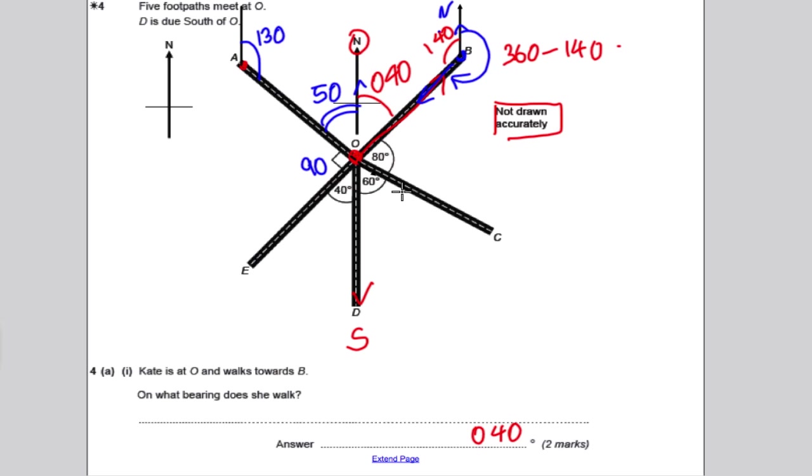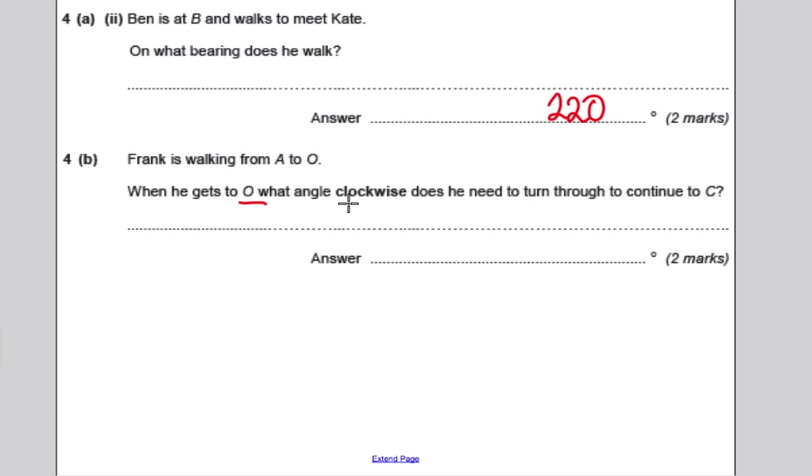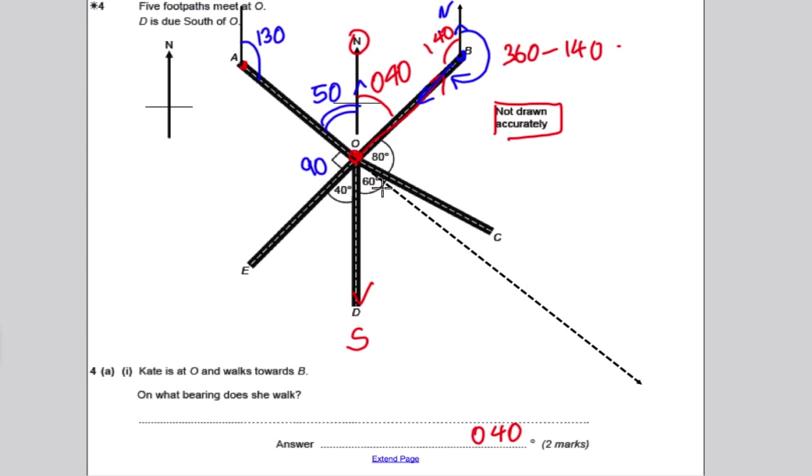Now, if he continued at O going along his bearing of 130, he'd go along that direction. But he wants to walk towards C. Now, the question stipulates, unfortunately, that he has to turn clockwise. He can't turn anticlockwise. So he can't, when he's here, just adjust and go along C. He's got to twist himself clockwise all the way around until he's on the right path to C.